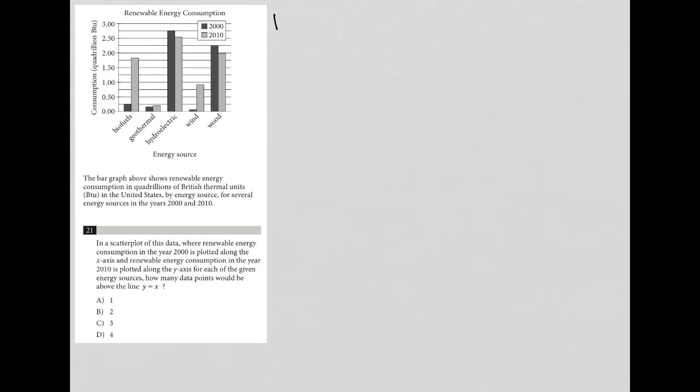This question looks like it's going to be a diagram question. We have a table or chart provided here. The title says renewable energy consumption. My x-axis is energy sources, my y-axis is consumption with a unit of quadrillion BTU, and I have these different energy sources. I can see how the consumption differs based upon the year.